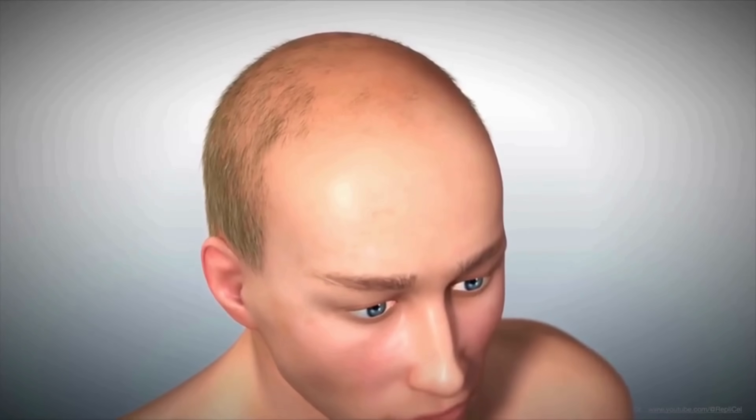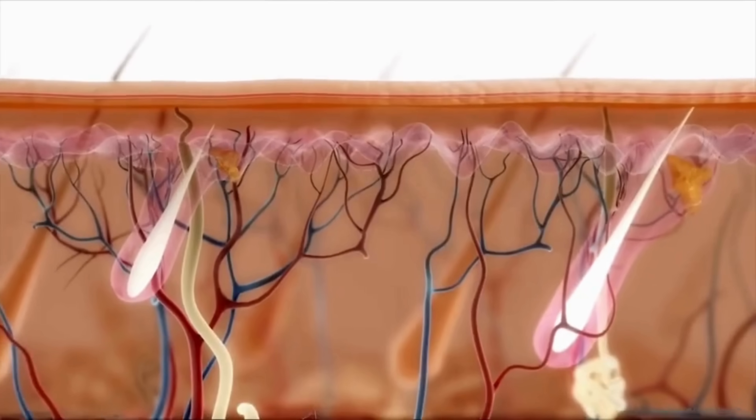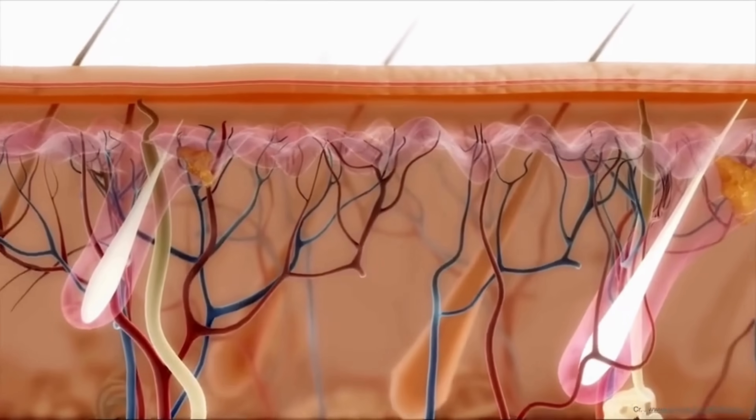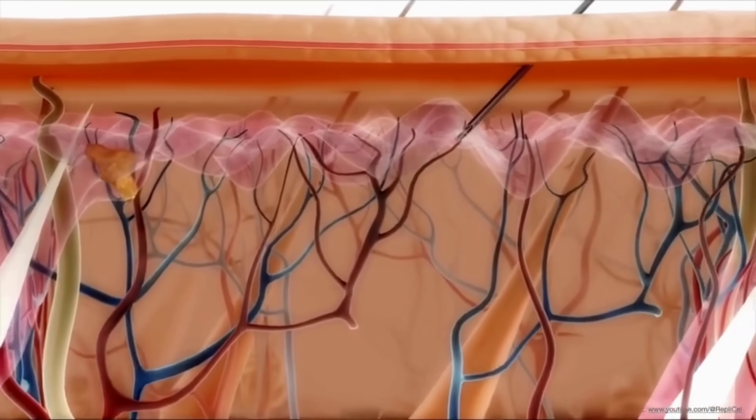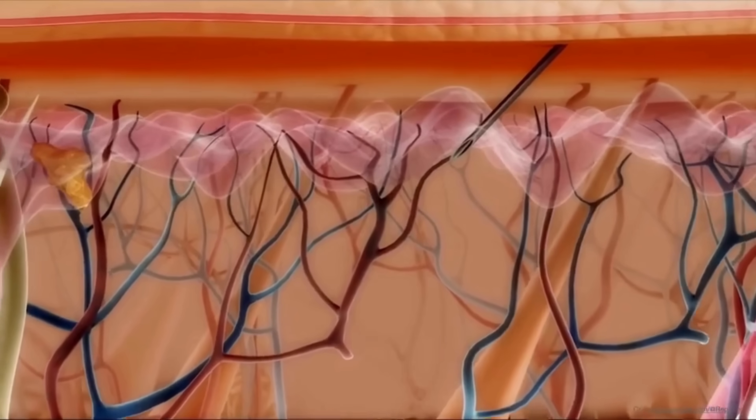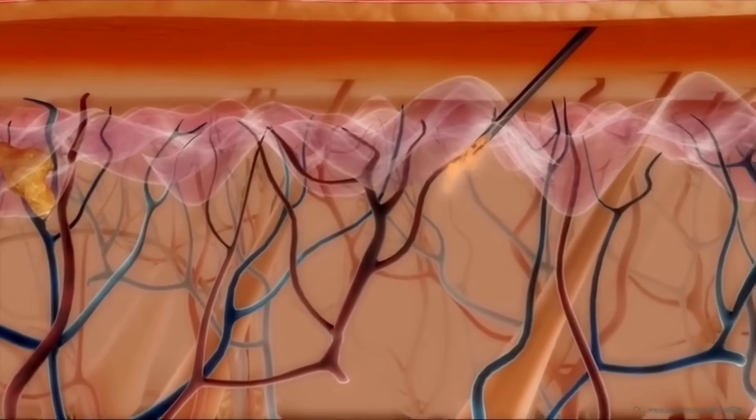The syringe is inserted into the upper dermis of the scalp and the patient's own replicated cells are injected below the skin's epidermal layer.